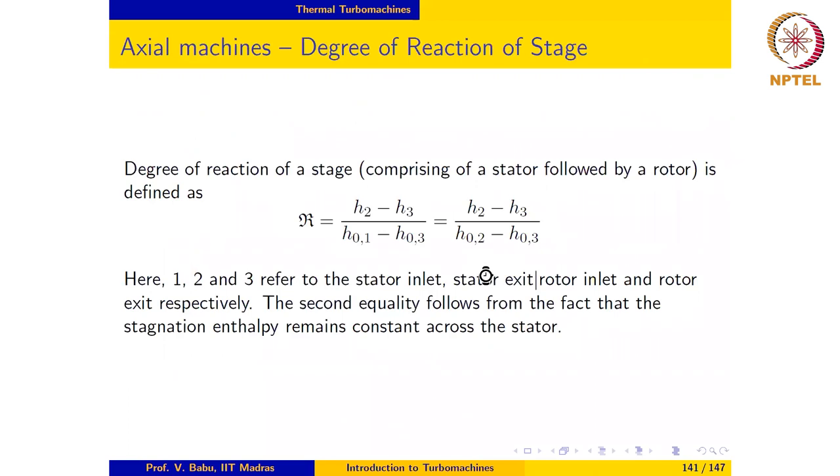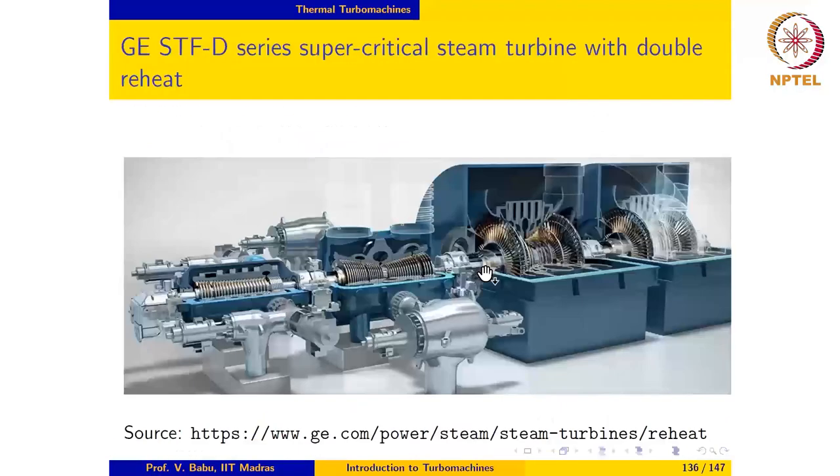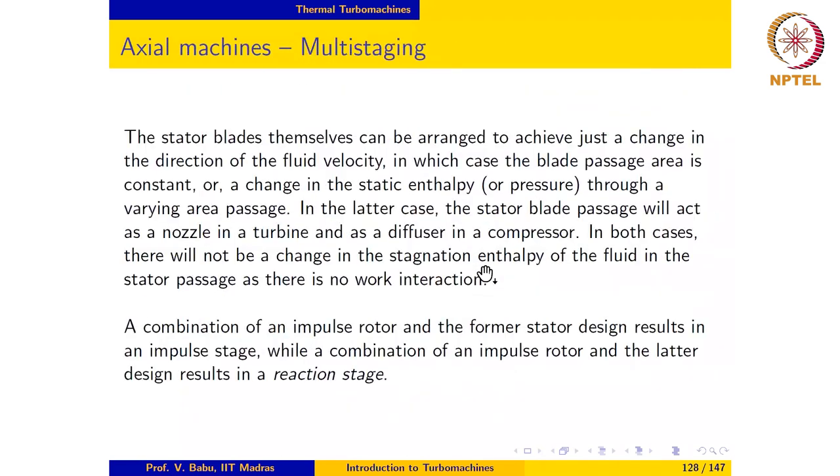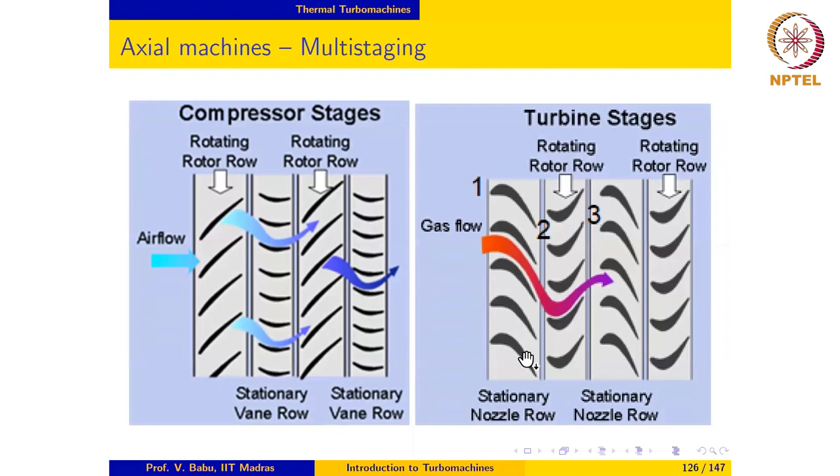Let us quickly go back and take a look at the blade shape here using the notation we have just given. Let us look at the turbine stage here. Here is 1, 2, and 3. The blade shapes are the same but they are reversed in direction, which means that alpha 2, the flow angle at the exit of the stator, should be equal to the blade angle at the exit of the rotor.